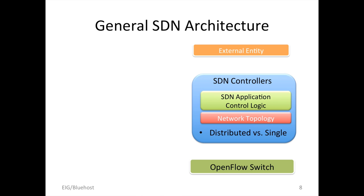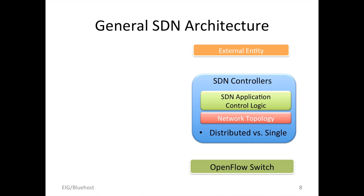Let's look at the general SDN architecture. There are three components typically: one external entity at the top, at the middle an SDN controller that has a set of SDN application logic, and some controllers also have a network topology management plane to keep the global view of all physical switches. Some plug-ins are single-instance by design; some are distributed by design. At the bottom there are OpenFlow protocol switches. Right now, OpenFlow is pretty much the one promising standard people really utilize — and we fully utilize the OpenFlow protocol.